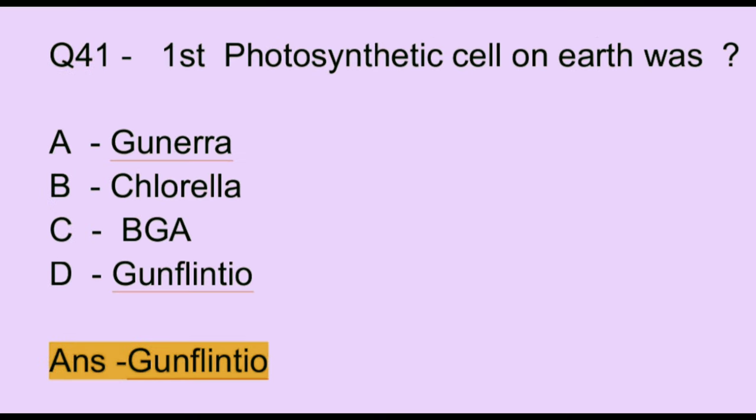Question number 41. First photosynthetic cell on earth was: Option A: Gunnera. Option B: Chlorella. Option C: BGA. Option D: Gunflintia. The correct answer is option D, which is Gunflintia.